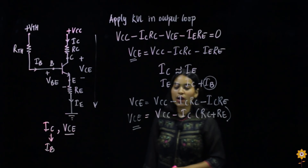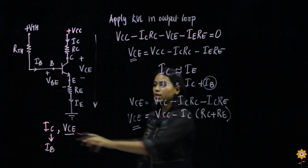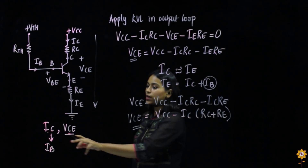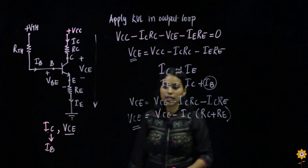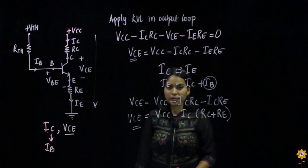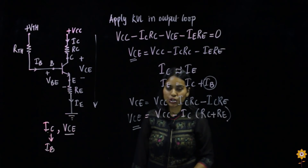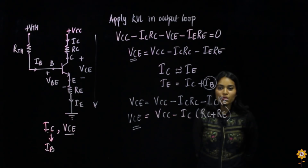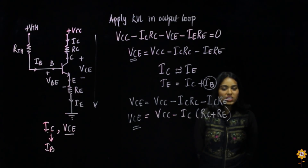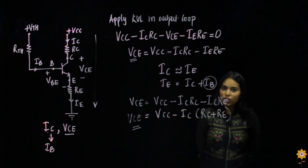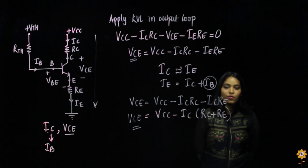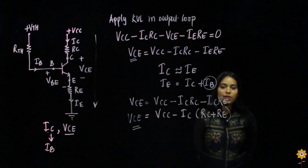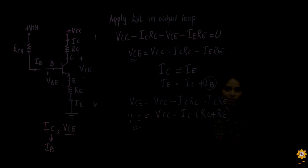We have found out both Ic and Vce for voltage divider bias configuration, and that is all that needs to be found. We have studied voltage divider bias configuration in this video. If you have any doubts, you can put them in the comment section below. Thank you for watching.